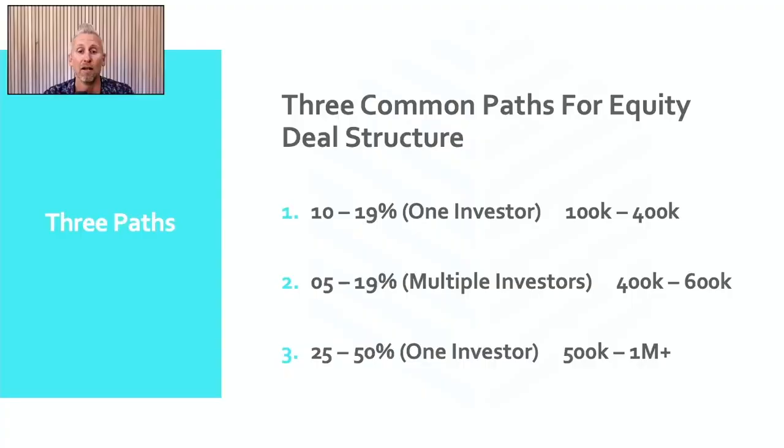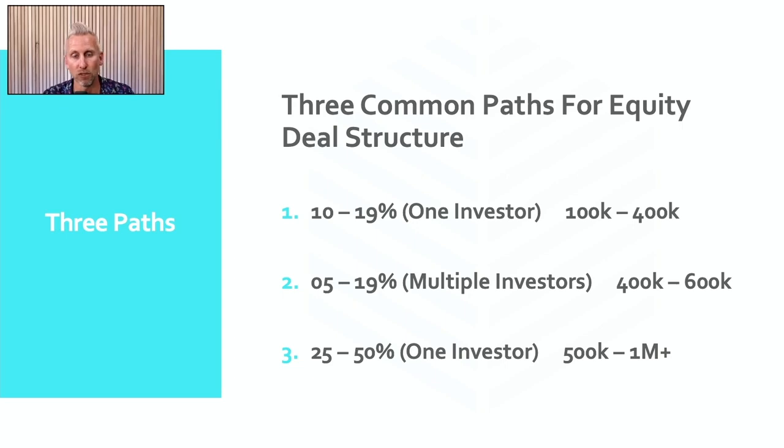If you needed to raise 50 grand or a hundred grand, perhaps 10% or maybe 5%. But I would consider it from this perspective: you probably don't want to raise money at like 3% equity — it's just not even worth someone's time. So this is why I put the example at 10 to 19%. Option one is you're trying to find one investor — one person — that can lend you a hundred grand to 400 grand.